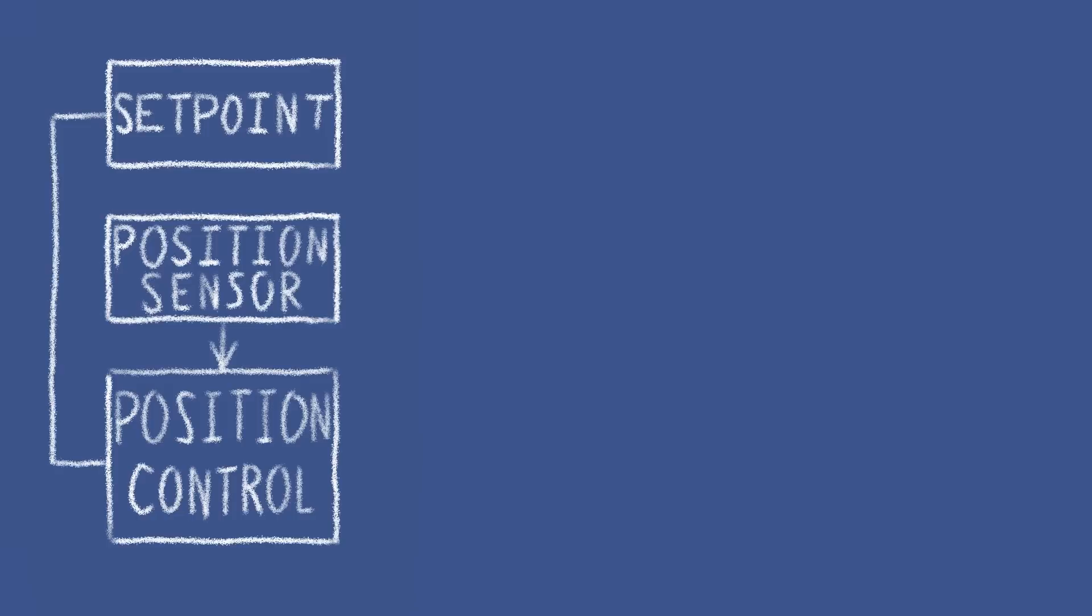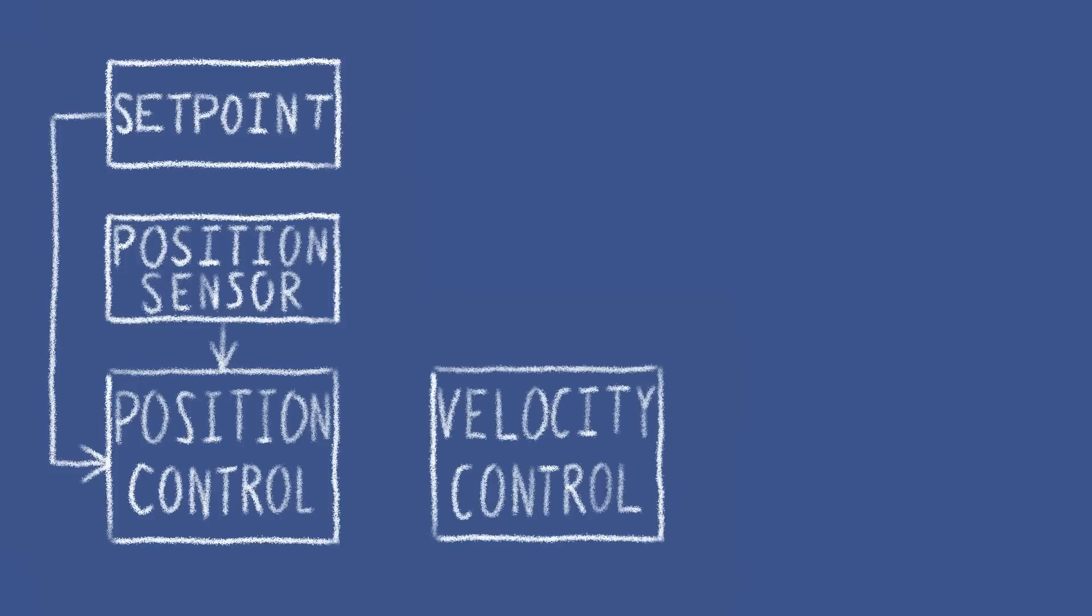The first layer is the position control. This layer's inputs are the setpoint and the current position from the sensor. The output is the desired motor's velocity. And we feed this output to the next layer, which is the velocity control. So, the first layer is constantly trying to achieve the desired position by changing the motor's velocity.